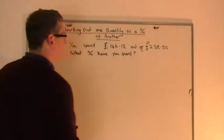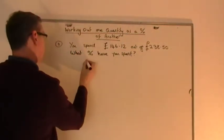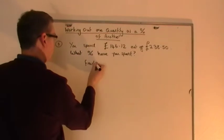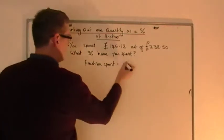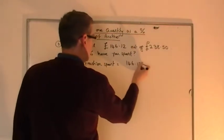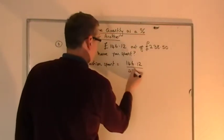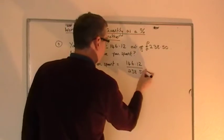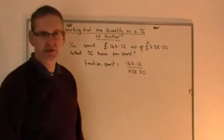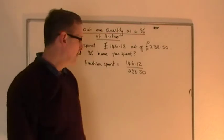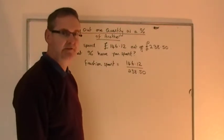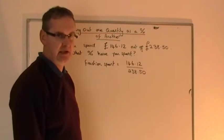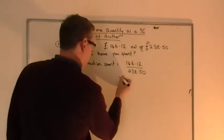So here we go. Fraction spent will be equal to, it's £146.12 out of £238.50. That is the fraction you've spent. Now obviously that there is really awkward. You would not even begin to think of doing that without a calculator. It's really, really nasty.